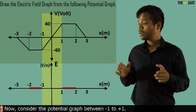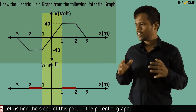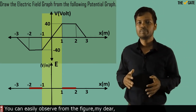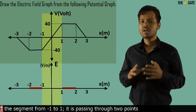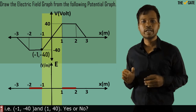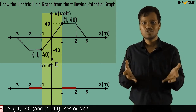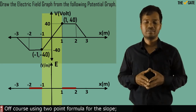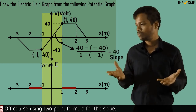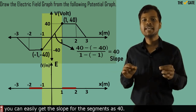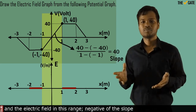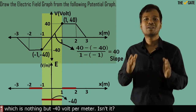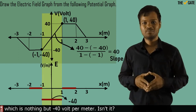Now consider the potential graph between x = -1 to x = +1. Let us find the slope of this part of the potential graph. The segment from -1 to 1 passes through two points: (-1, -40) and (1, 40). Using the two-point formula for the slope, you can easily get the slope of this segment to be 40. And the electric field in this range — the negative of the slope — is nothing but -40 volt per meter.